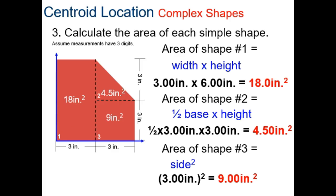So, how do we do this? First thing that we're going to do is we're going to calculate the area of each simple shape. So, area 1 is this rectangle, 3 inches by 6 inches, 18 square inches. Area 2, this triangle, is one half of base times height. So, one half, still 3 inches across here, times 3 inches tall. And then, area of shape 3 is a square, 3 inches on the other side, 3 times 3, so 9 square inches.